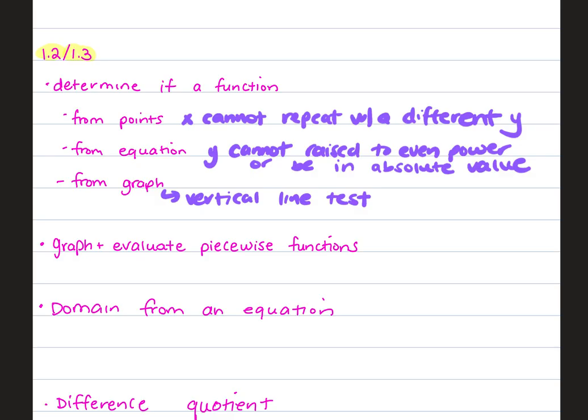From an equation, y cannot be raised to an even power or be in absolute value. That turns your function on its side and it would fail the vertical line test, which is how we test to see if it's a function from a graph. All right, then we got to piecewise functions. And again, some of it was in 1.2 and some of it was in 1.3. Piecewise functions, if I gave you the function, you'd have to answer a question like, what is f of 3? Or what is f of 2? You'd have to use your graph. That happened in like 1.2. And then in 1.3, we talked about how to graph them. So you need to know how to do both. I can give you the equations for your piecewise function. You'd have to be able to graph them, okay? And then also be able to answer a question based on them.